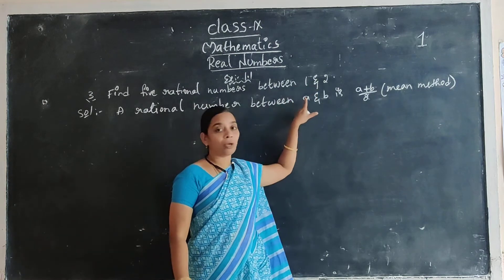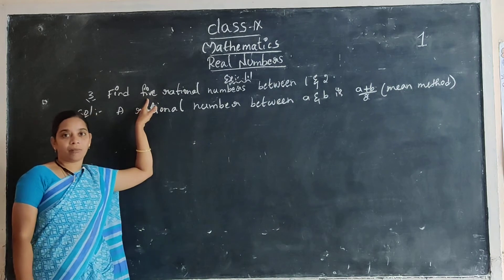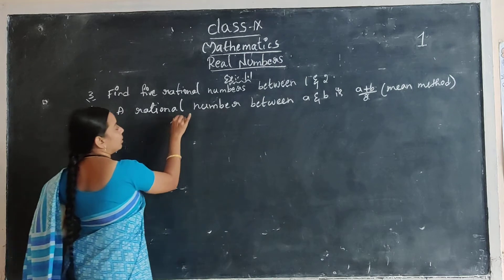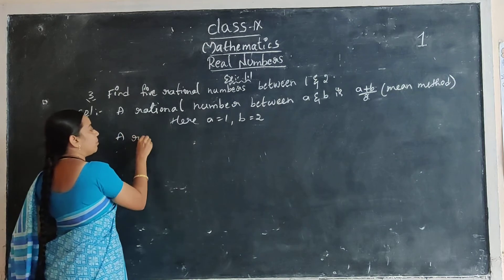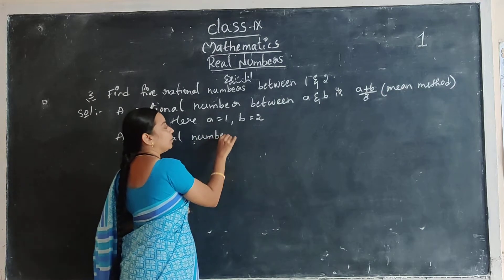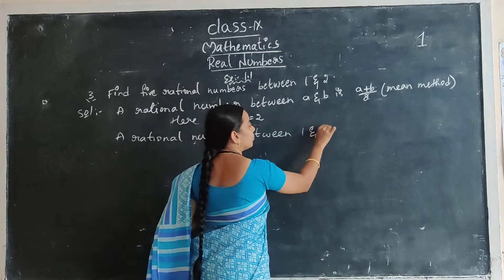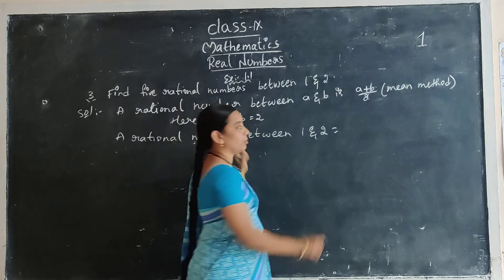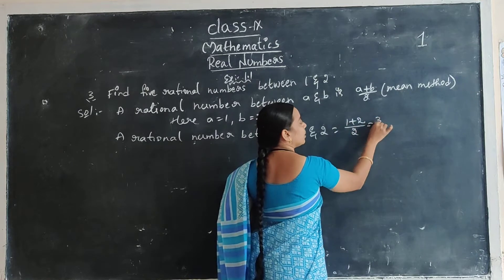The given numbers are the values of A and B. Now we want to find five rational numbers. First of all, find the first rational number. Here A value is 1 and B value is 2. A rational number between A and B: substitute here — 1 plus 2 by 2. 1 plus 2 is 3, so 3 by 2.